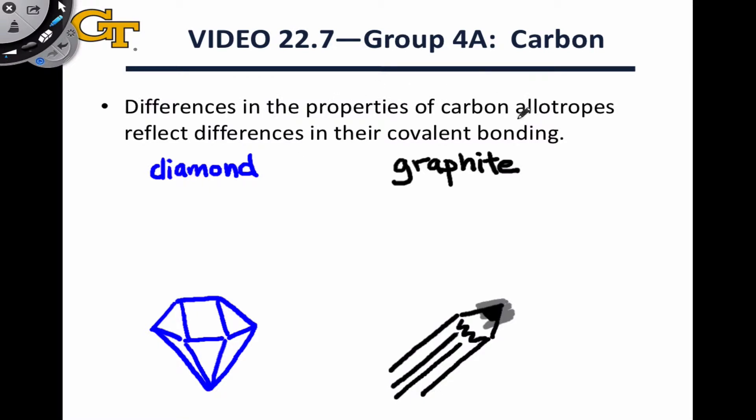Elemental carbon has a number of different allotropes, which are different forms of an element with different microscopic structures and different properties. Two of the most notable allotropes of carbon are diamond and graphite, and they have very different structures on the microscopic level.